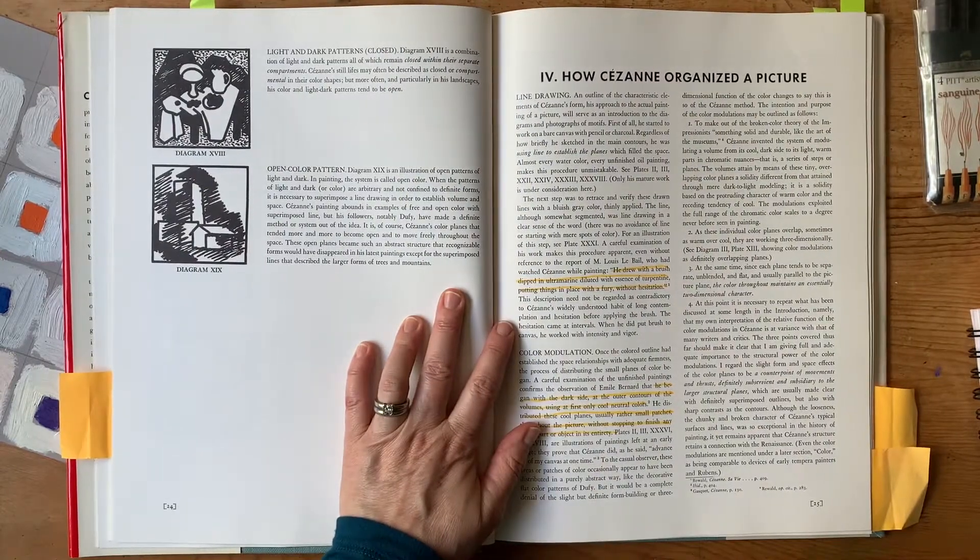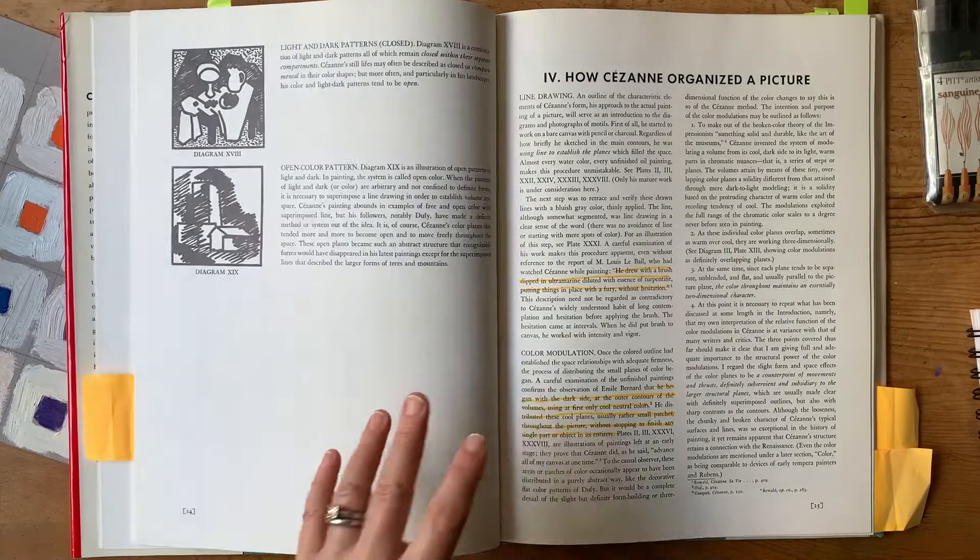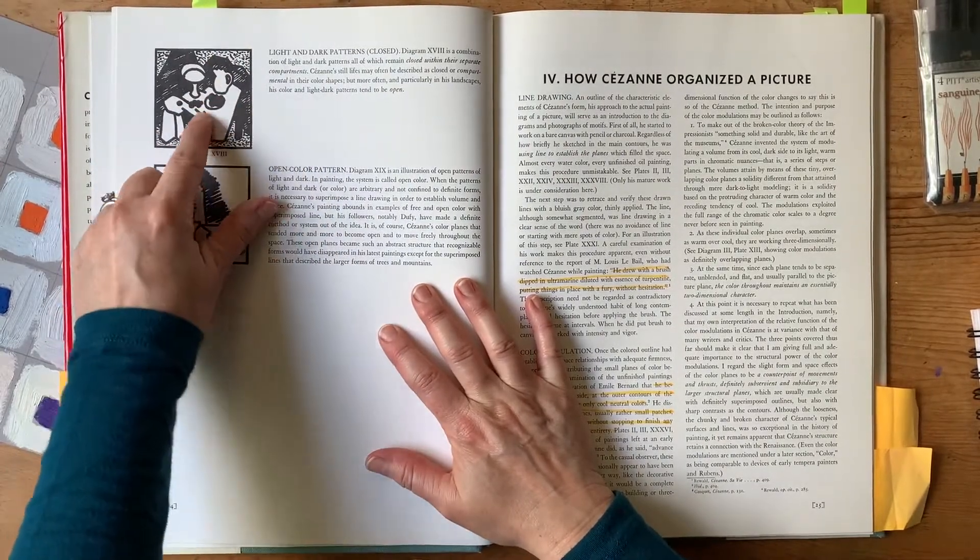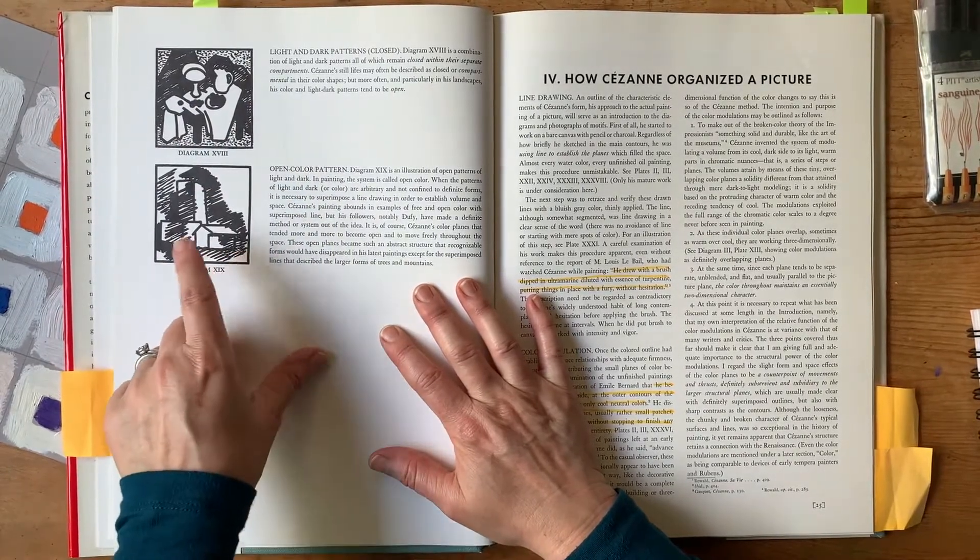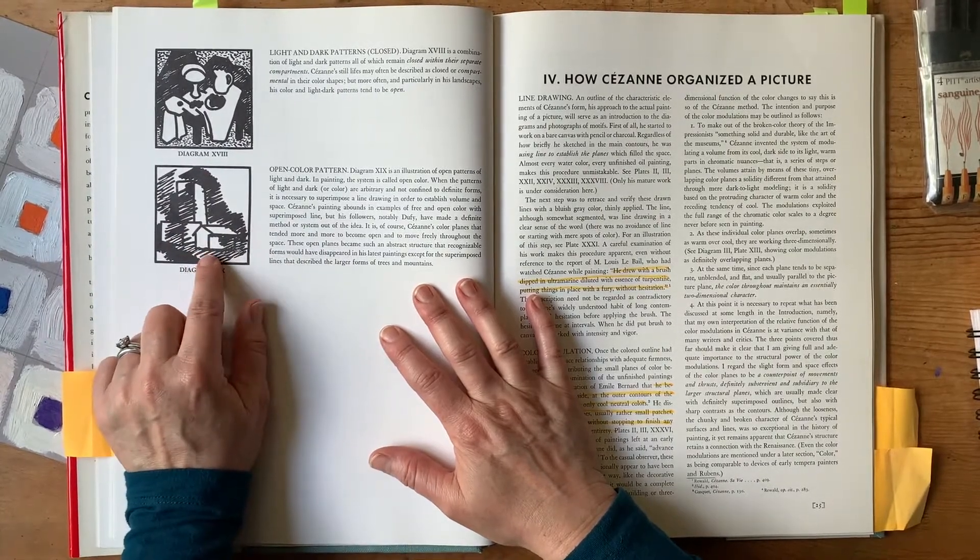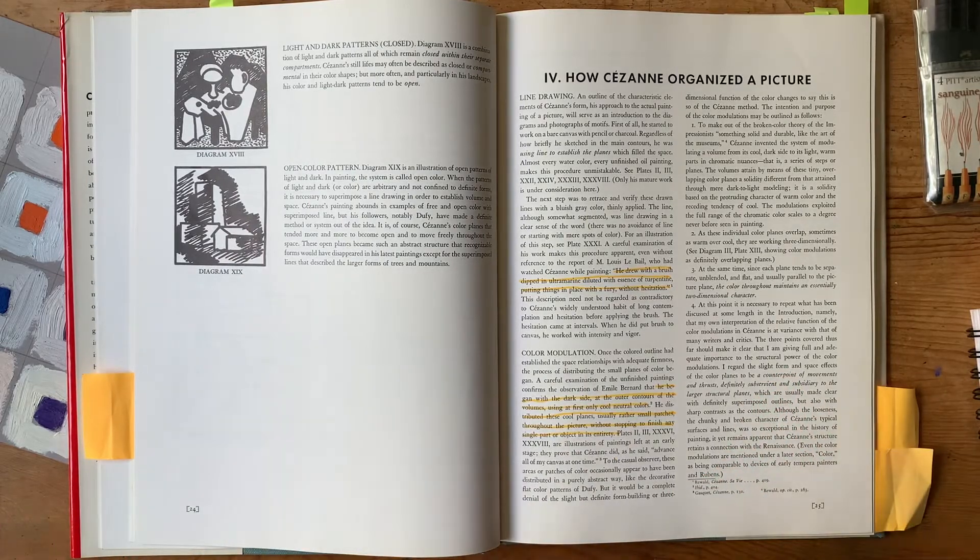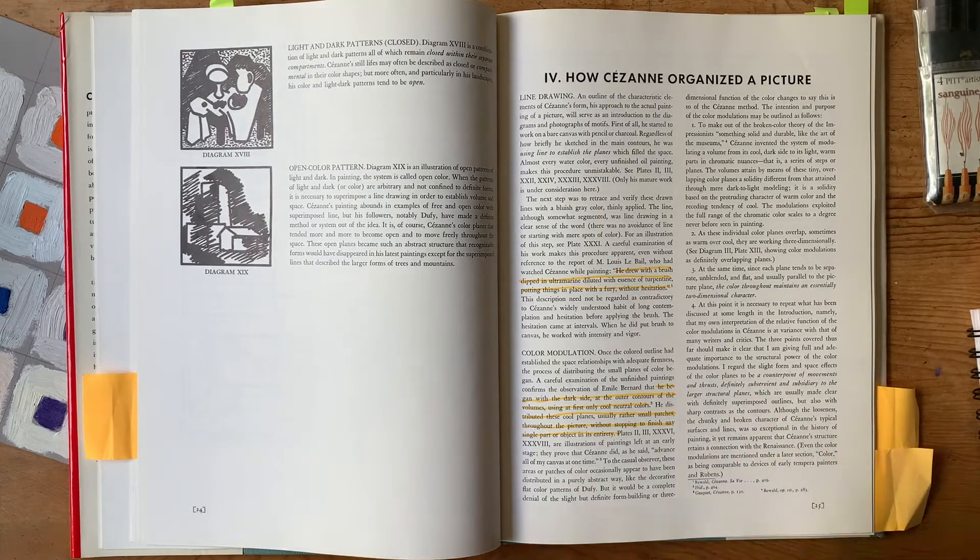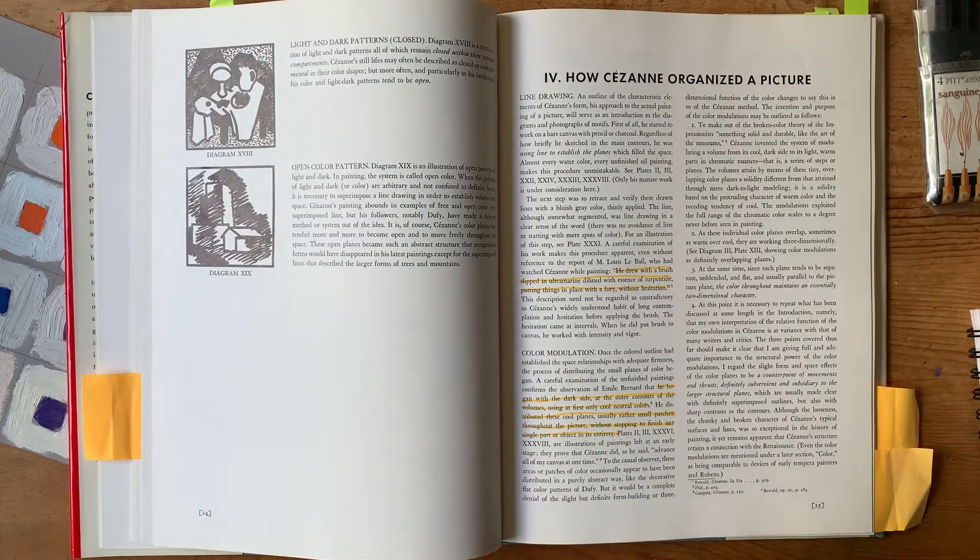And then within a painting, you can have light and dark patterns. They can either be closed or open. And so an example of a closed one is that the light is essentially pretty much enclosed by the dark. Versus where the organization of your open and closed is not so confined, or the shapes have the ability to bleed open.